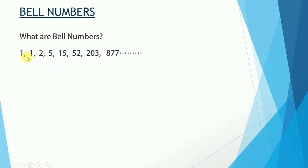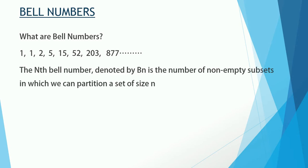Here is the series of Bell numbers, which starts with 1, 1, 2, 5, 15, 52, 203, 877, and so on. The nth Bell number, denoted B_n, is the number of ways we can partition a set of size n into non-empty subsets. So if a set of size 3 is given, the Bell number tells us in how many ways we can partition that set.